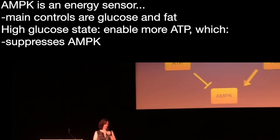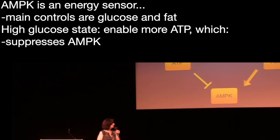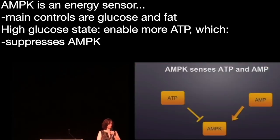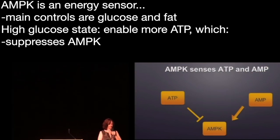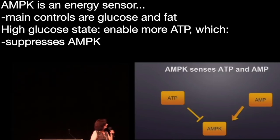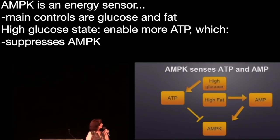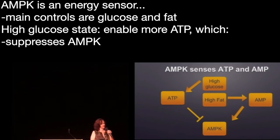AMPK is an energy sensor. You may know about ATP as a form of energetic currency. AMP is what's left over when you're using ATP, so there's a cycling back and forth — using ATP, getting AMP out, and then remaking it back into ATP later.